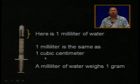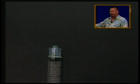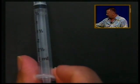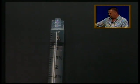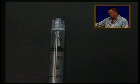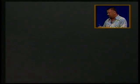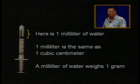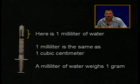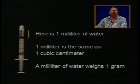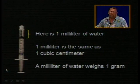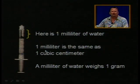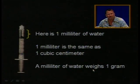Here is one milliliter of water. I'll switch the Elmo so you can see what this looks like. This is a three milliliter syringe. And if I draw my imaginary water into this syringe, right there I have exactly one milliliter — a little teeny tiny thing. So a milliliter is the same thing as a cubic centimeter. Volume and length are related to each other. One milliliter of water is the same thing as one cubic centimeter, and a milliliter of water weighs one gram.